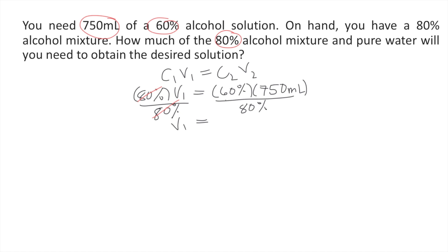On the right side, as you can see, the percents would cancel out. So basically, that's 60 times 750 divided by 80. That is equal to 562.5.